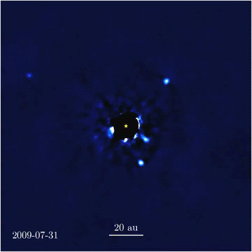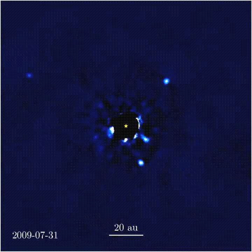This method works best for young planets that emit infrared light and are far from the glare of the star. This list includes both directly imaged planets and imaged planetary mass companions — objects that orbit a star but formed through a binary star formation process, not a planet formation process. This list does not include free-floating planetary mass objects in star-forming regions or young associations, which are also referred to as rogue planets.